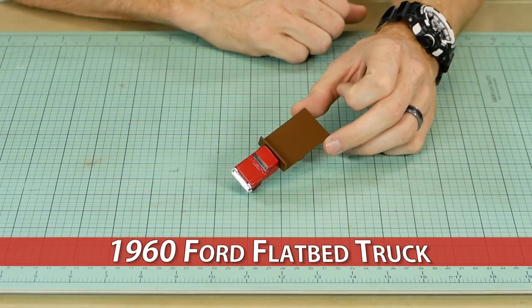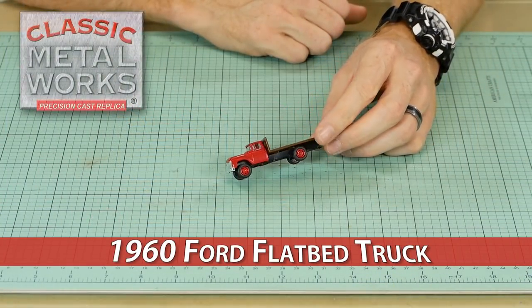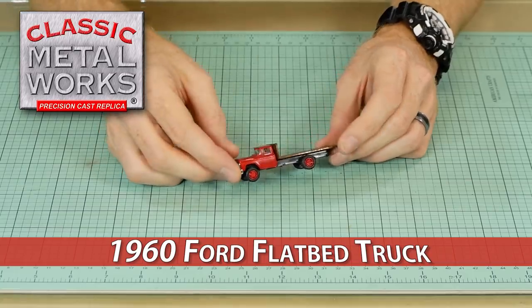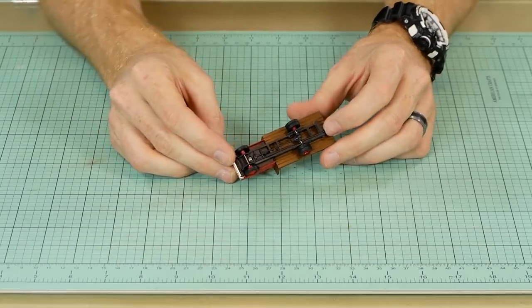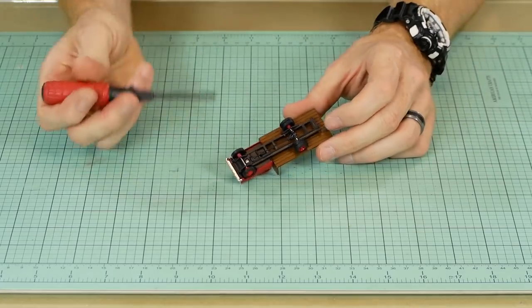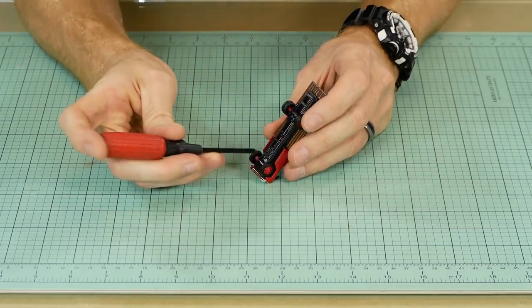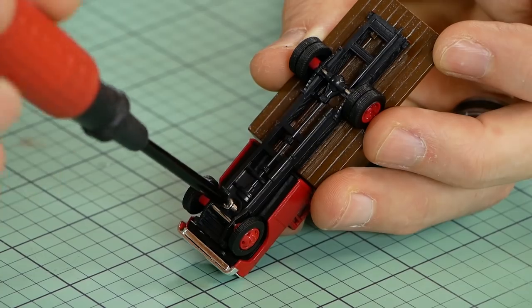This 1960 Ford flatbed truck from Classic Metalworks looks great but it definitely needs some dirt, oil and grime. What I love most about working with these particular models is they are very easy to dismantle, which is great when you want to add a driver.